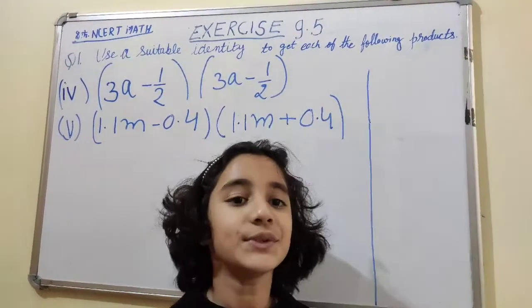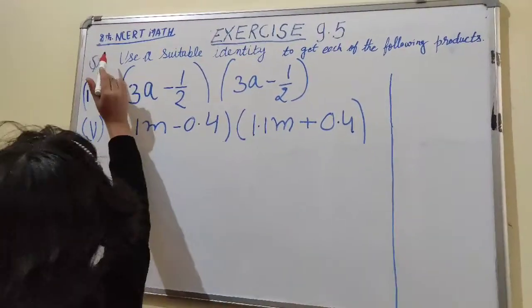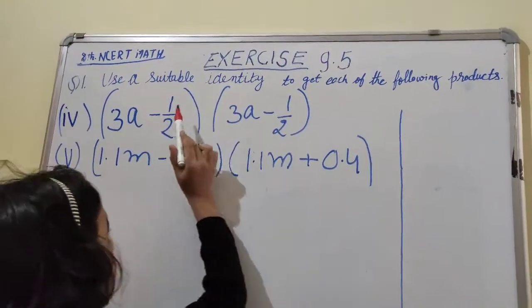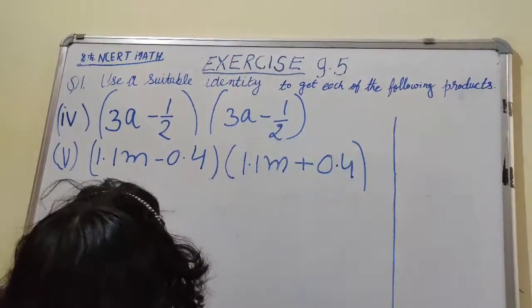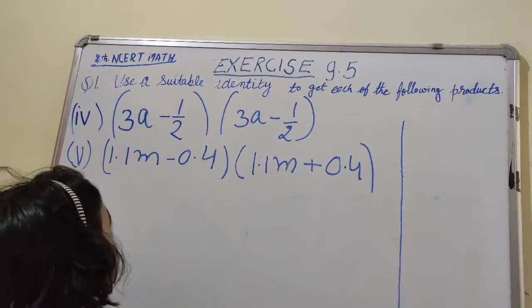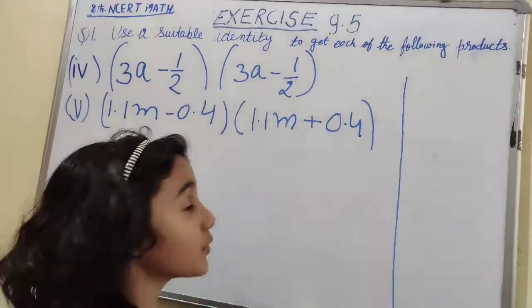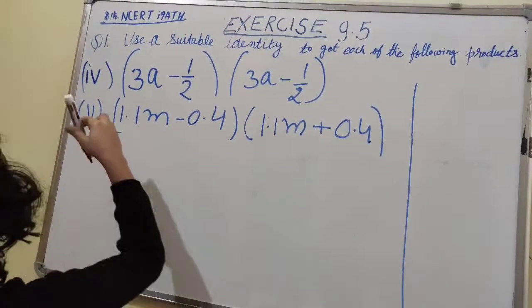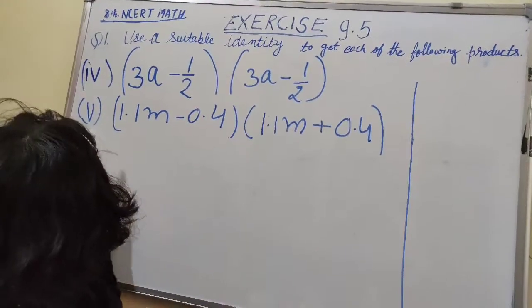Friends, today I am going to teach you class 8 NCERT maths exercise 9.5 Question number 1. Use a suitable identity to get each of the following products.